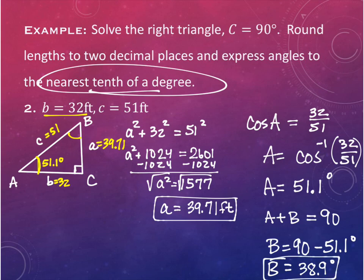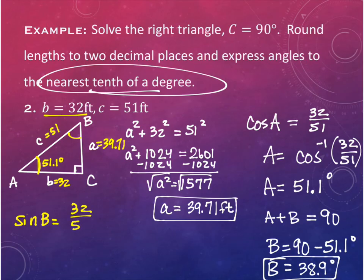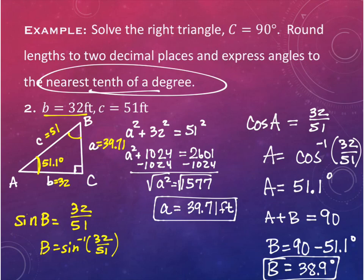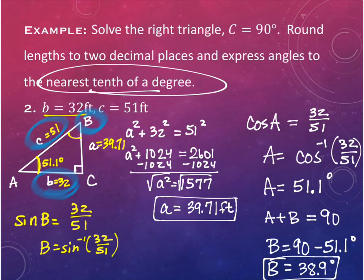To confirm using the given information: the sine of B equals 32 over 51, so angle B equals the inverse sine of 32 over 51. It's sine because we're looking at opposite over hypotenuse for angle B. That also gives 38.9 degrees - we get the same result whether we use subtraction from 90 or the trig function directly.